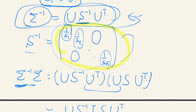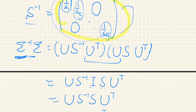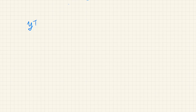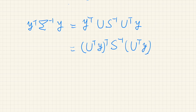Next, using this expression for sigma inverse, let's consider the exponent of this function: Y^T sigma^{-1} Y. If we replace sigma inverse by U S^{-1} U^T, and set Z equal to U^T Y, we get Z^T S^{-1} Z.